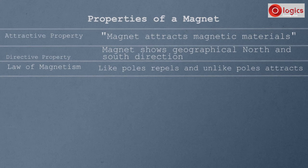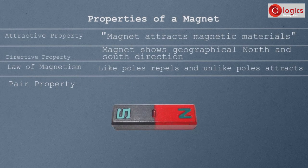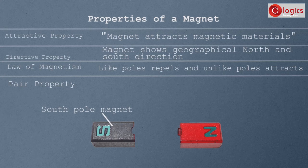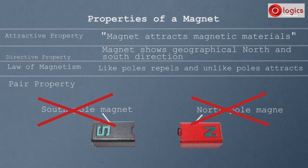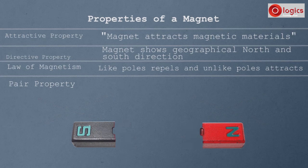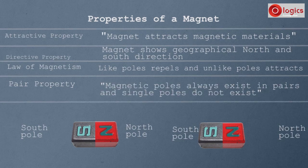Pair property: when you break a magnet into two pieces, you cannot say one piece is a single south pole magnet and the other a single north pole magnet. That would be wrong. Each piece behaves like an individual magnet because it has both north and south poles. In a magnet, magnetic poles always exist in pairs — single poles do not exist.